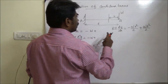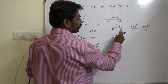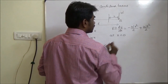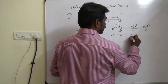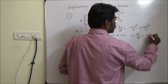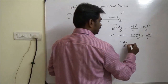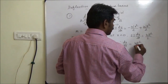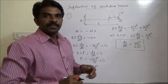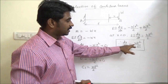So EI dy/dx = −Wx²/2 + WL²/2. We can find the slope at x = 0 (the free end): EI dy/dx = WL²/2. Therefore dy/dx at the free end is WL²/2EI. Note: if we had taken x from the other end, this would be negative.